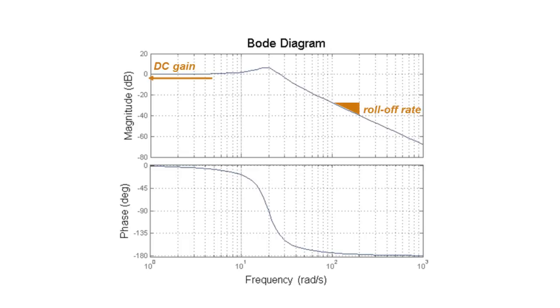Next, roll-off rate refers to the slope at which the magnitude drops off at high frequency. This is usually expressed in dBs per decade, meaning a factor of 10 on the frequency scale.